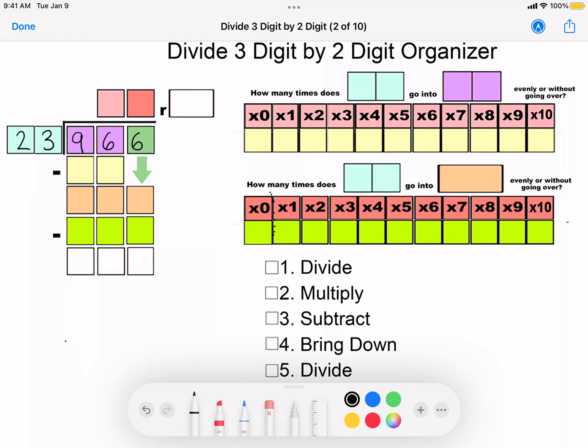You just type in whatever you're dividing by and it gives you the first nine multiples. We're teaching the skill of division, so I would focus just on this first. Then we follow the chart, follow our colors.